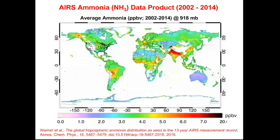Another data set that just became available is ammonia. Ammonia is an air toxic and also leads to the formation of particulate matter, which is unhealthy. It is primarily produced through agriculture, so high levels are seen in places like India, the central US, and California. It is also produced through wildfires and intentional burning in regions like Africa and South America. There is a new paper on this topic free to download in the journal Atmospheric Chemistry and Physics.